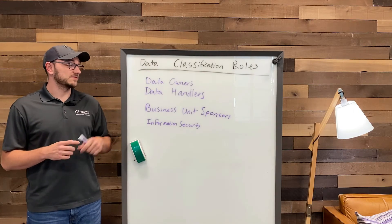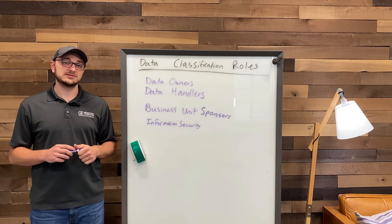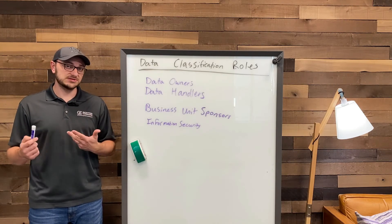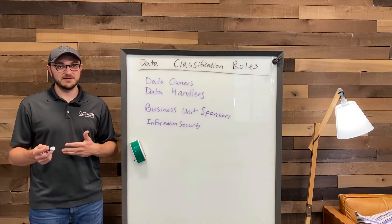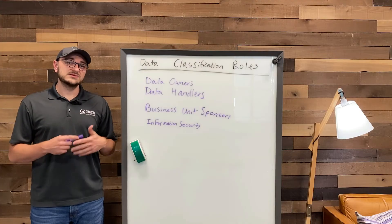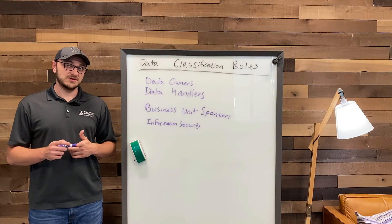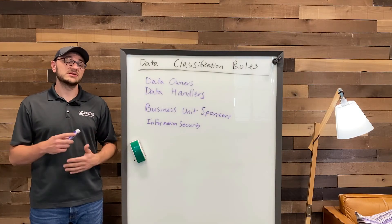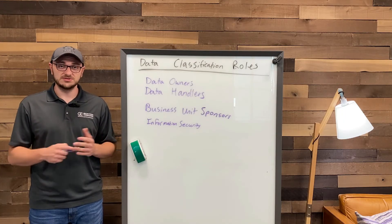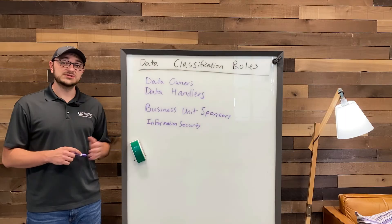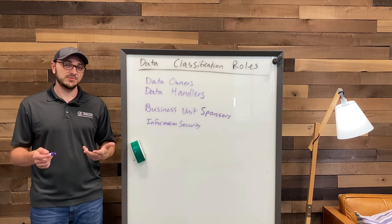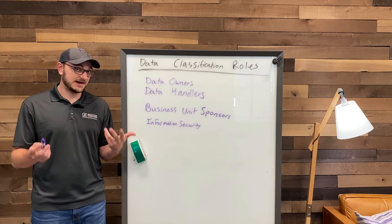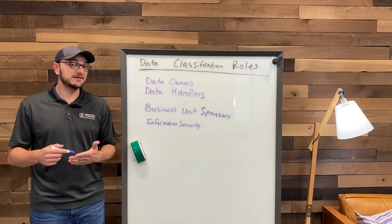The third role is the business unit sponsors, and these are extremely important members of the organization. They work within their business unit to bring awareness to data classification, making sure all employees throughout the unit know how important data classification is and that they're following proper protocol when classifying data. This also deals with the different training done for employees in a business unit. The final role is the information security team, who make sure that all technical controls are in place and enforced — ensuring that all restricted data can only be accessed by those individuals who actually need it for their business use.